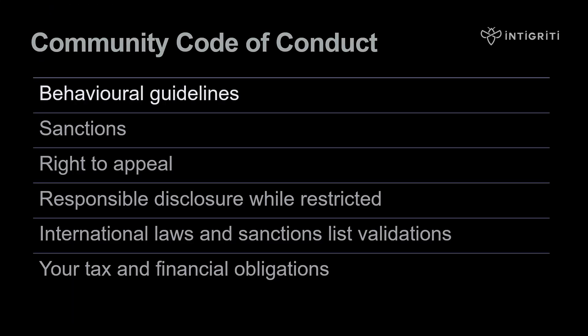Behavioral guidelines: discriminatory, sexist, offensive behavior and other harmful acts are prohibited. Researchers should strive to be polite, respectful, and understanding with triage, clients, and other researchers. Sanctions may be applied if you fail to adhere to the code of conduct, and the type of sanction will depend on the intent, impact, and frequency of the violation. Sanction types can include warnings, invitation restrictions, payment restrictions, and platform restrictions.